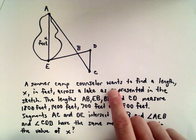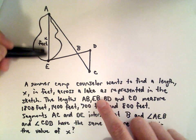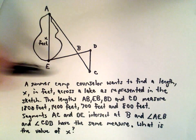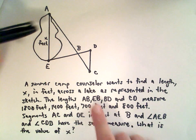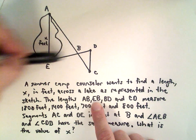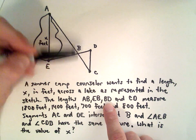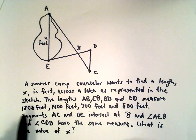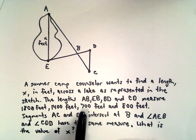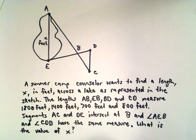A summer camp counselor wants to find a length x in feet across a lake as given in the diagram. The lengths AB, EB, BD, and CD measure 1800 feet, 1400 feet, 700 feet, and 800 feet respectively.